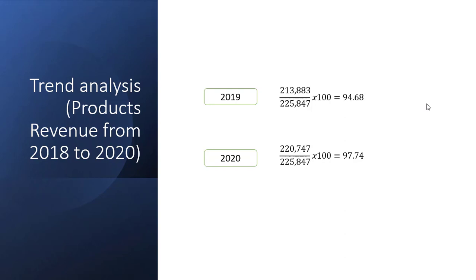However, neither year is exceeding 100, which is allocated for the base year. In essence, 2018 still did well in terms of products revenue. In trend analysis, if the result is higher than 100 it means the account — in this case product revenue — had increased. But here it's below 100, meaning it is below the base year and not really better than 2018.